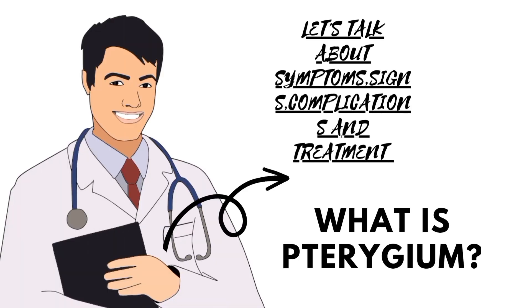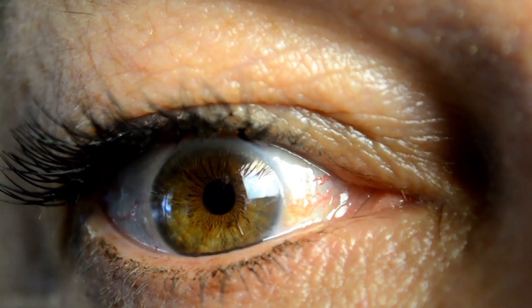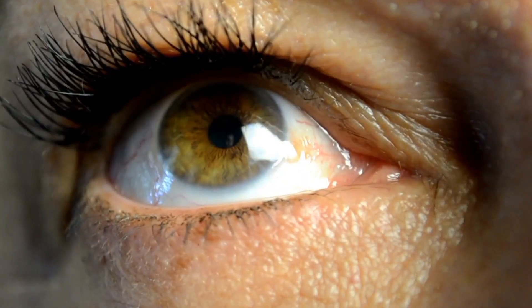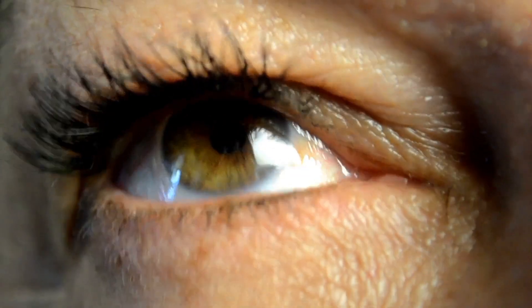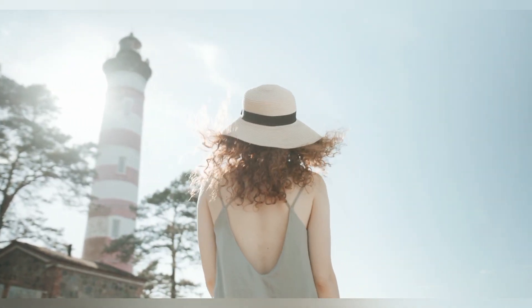What is pterygium? Let's talk about symptoms, diagnosis, and treatment. The growth of tissue in the corner of the eye is known as pterygium. It is triangular in shape. If left untreated, it will grow and can extend across the pupil, obscuring vision or distorting the surface of the eye, which causes blurred vision.